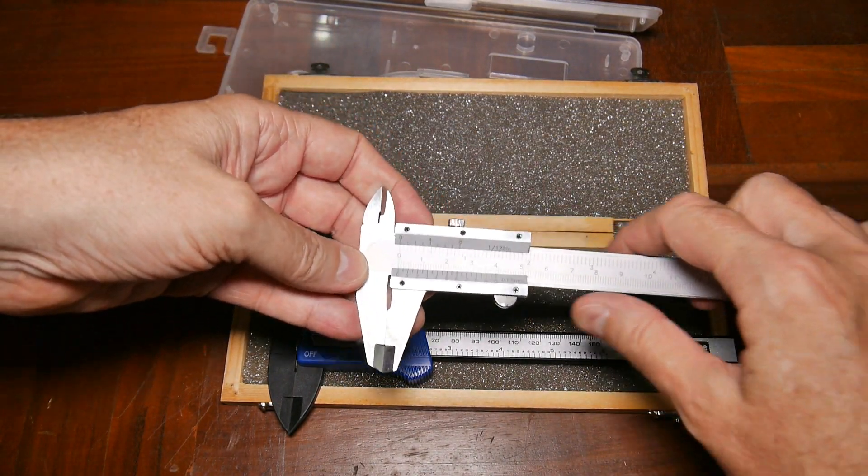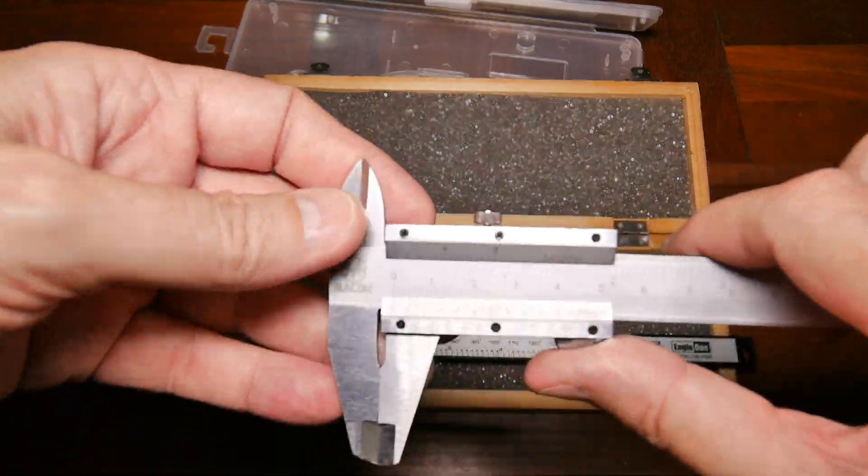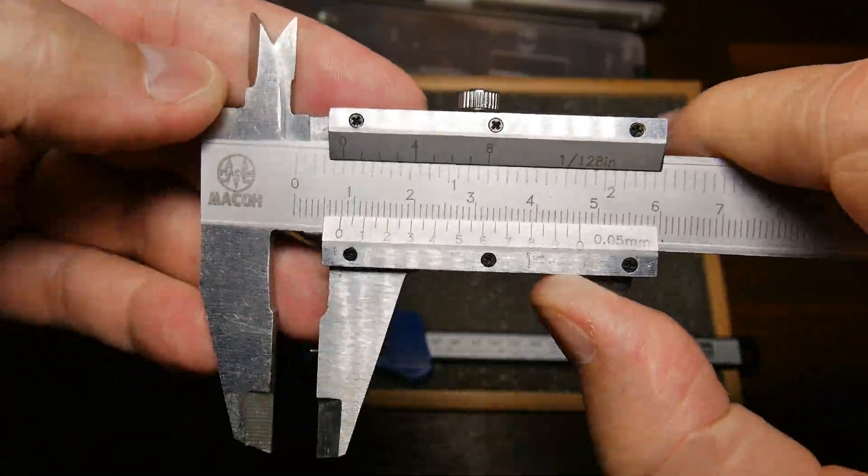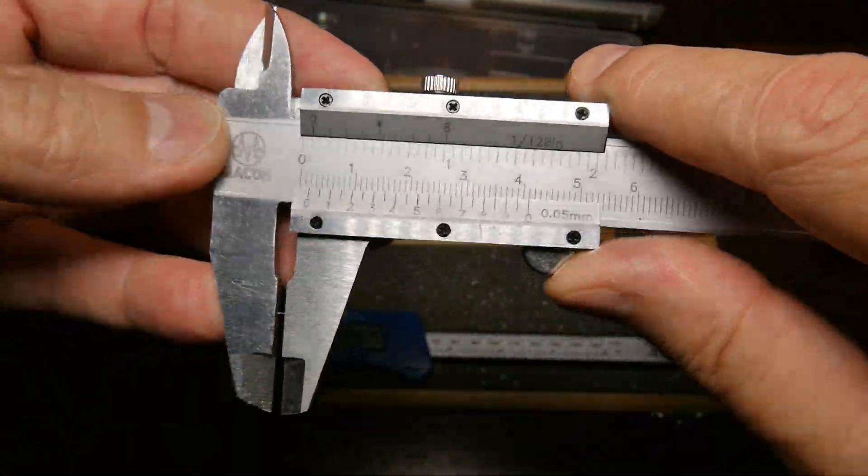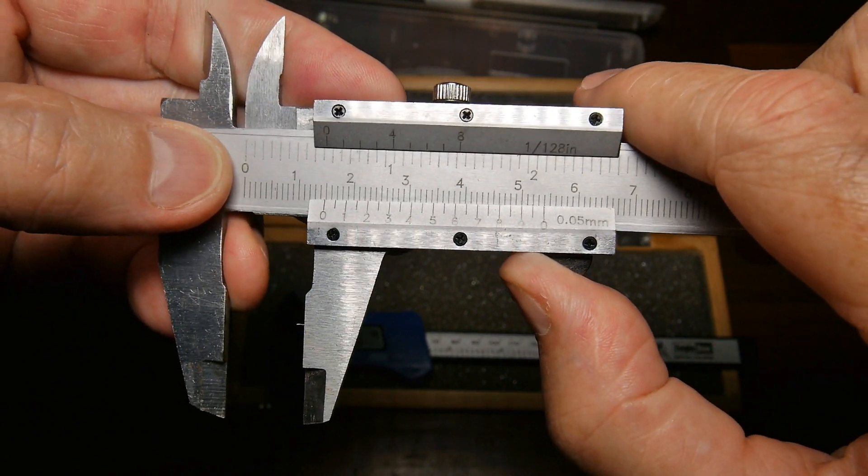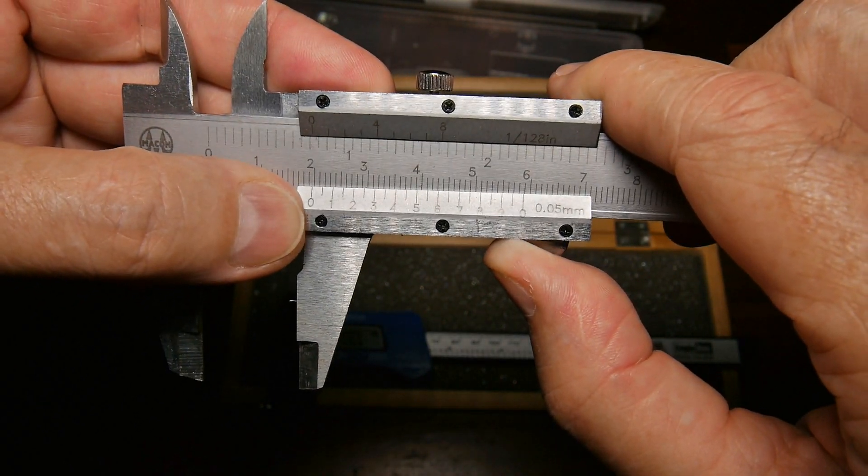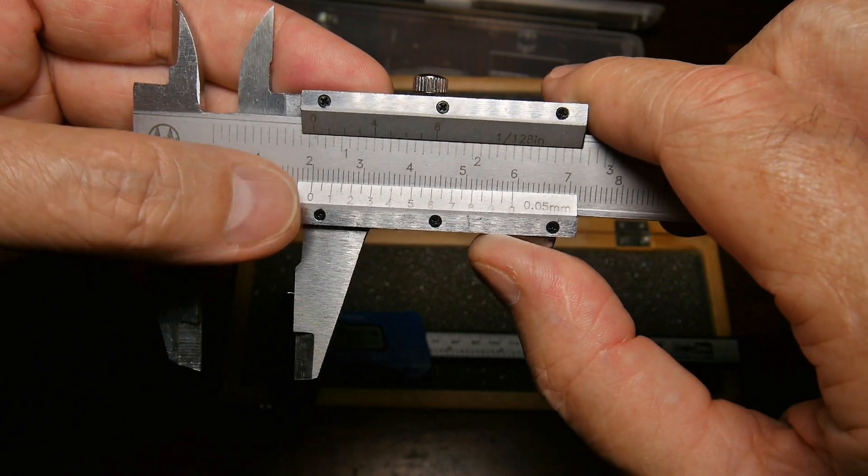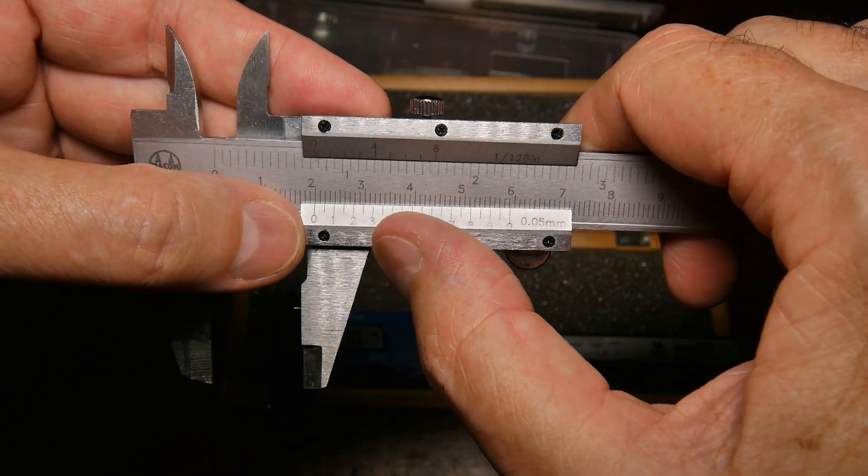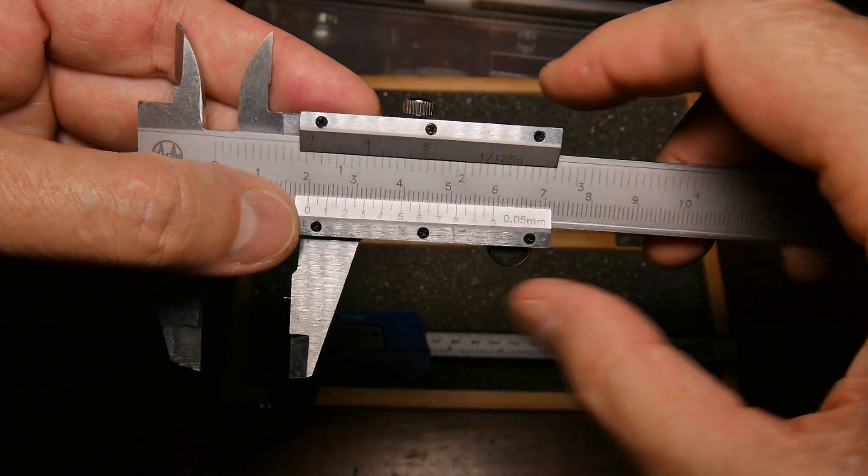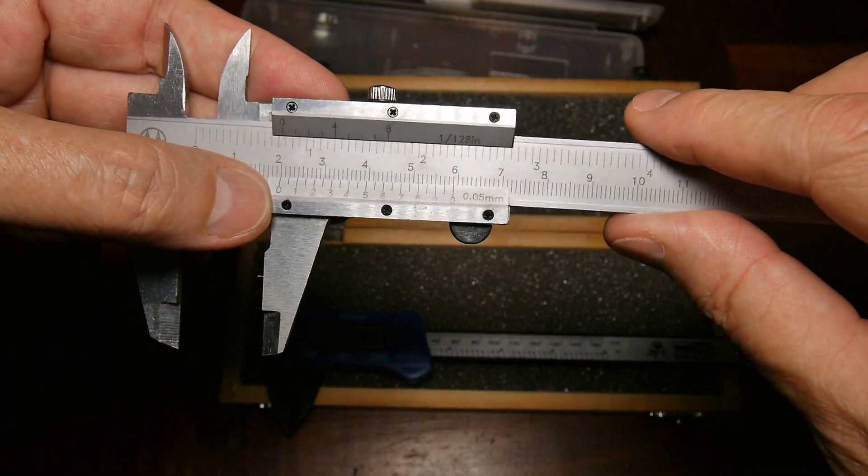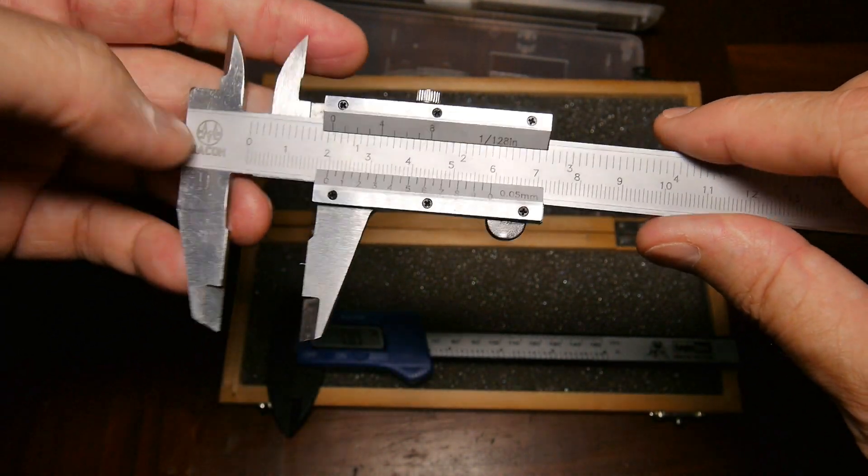It's just your standard vernier caliper. With this one, you know how to read a vernier caliper. You start out here and I always have to look up how to do it, but say it's 2 point something. Then you have to follow the bottom scale along until you find a good match.